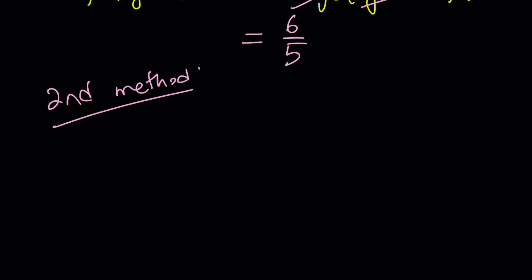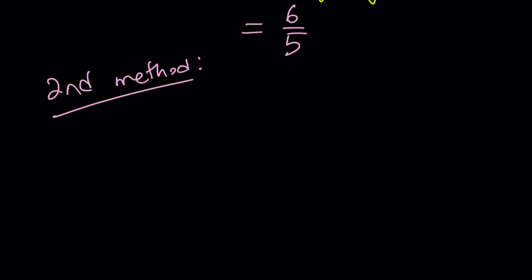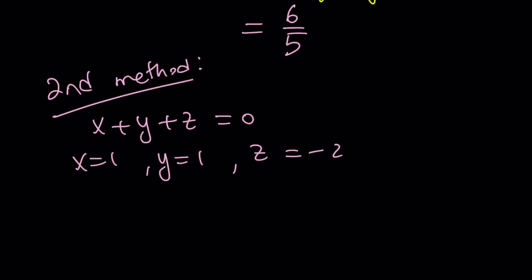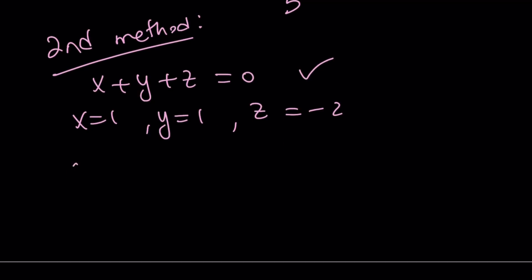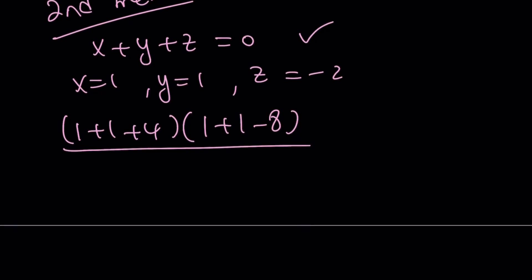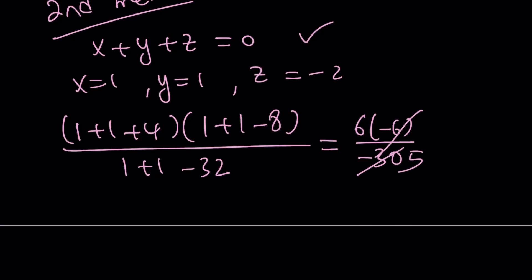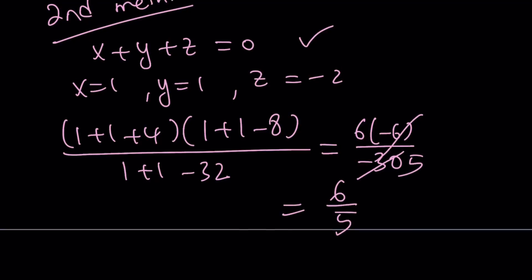Now for the second method. Since x plus y plus z equals zero and we know the result will be numerical, we can choose specific values. Suppose x equals 1, y equals 1, and z equals negative 2 — the initial condition is satisfied. Plugging into the expression: the sum of squares is 1 plus 1 plus 4, the sum of cubes is 1 plus 1 minus 8, and the sum of fifth powers is 1 plus 1 minus 32. That gives us 6 times negative 6 divided by negative 30, which simplifies to 6 over 5 again.